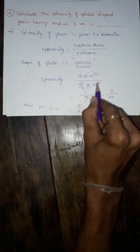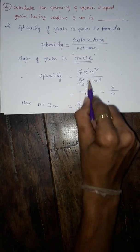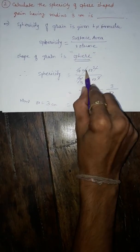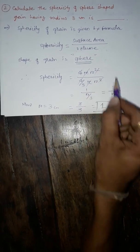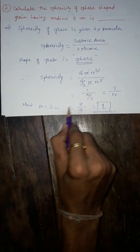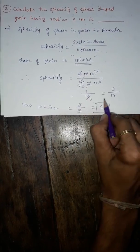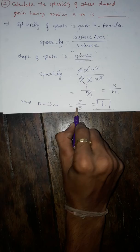By dividing surface area by volume we get 4, 4 gets cancelled, π π gets cancelled and r² r² gets cancelled. We have 1 upon r by 3, by changing 3 by r.